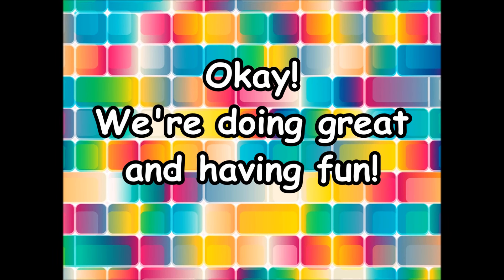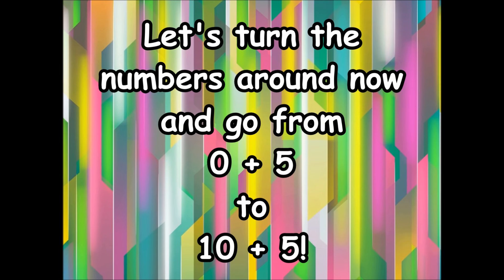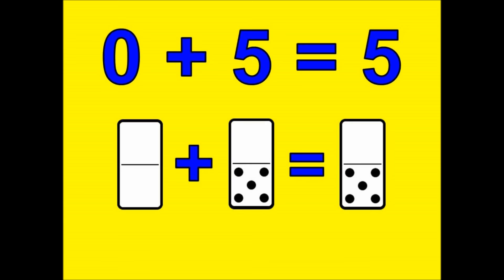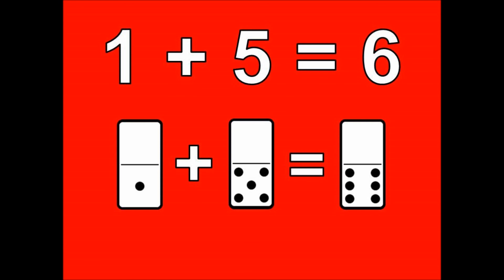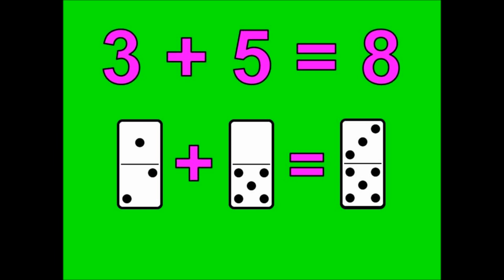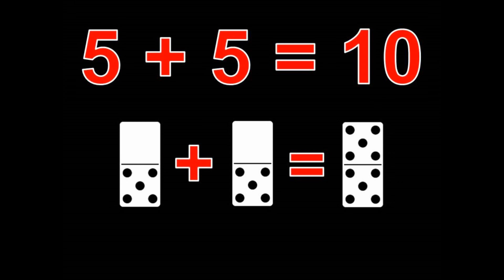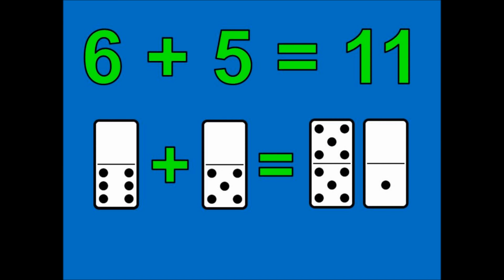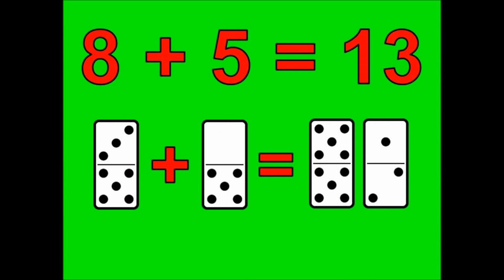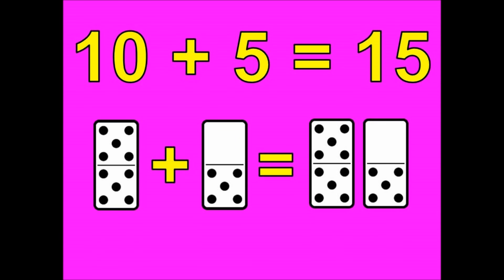Okay, we're doing great and having fun. Let's turn the numbers around now and go from zero plus five to ten plus five. Zero plus five is five. One plus five is six. Two plus five is seven. Three plus five is eight. Four plus five is nine. Five plus five is ten. Six plus five is eleven. Seven plus five is twelve. Eight plus five is thirteen. Nine plus five is fourteen. Ten plus five is fifteen.